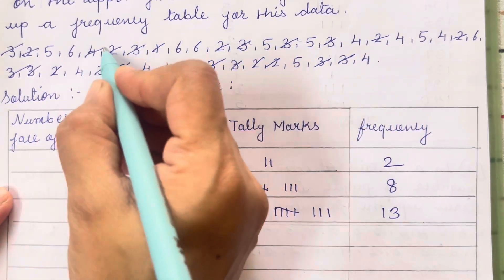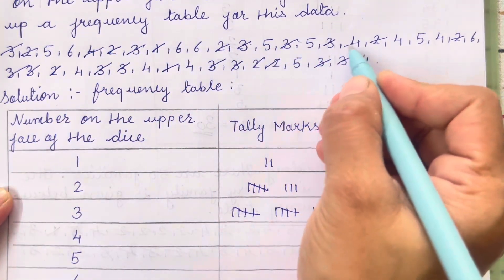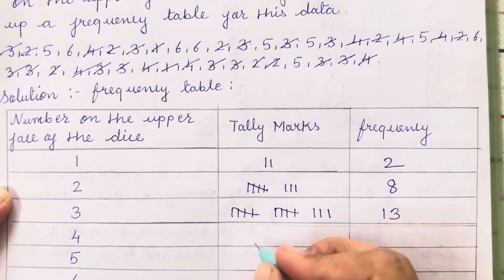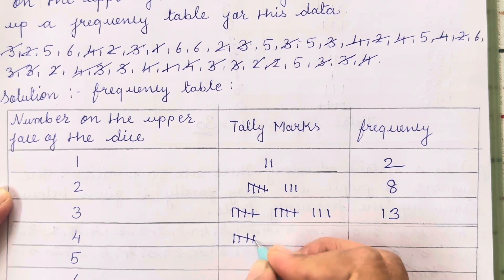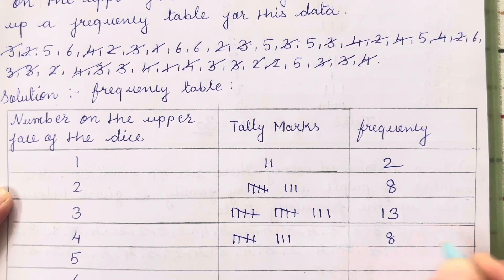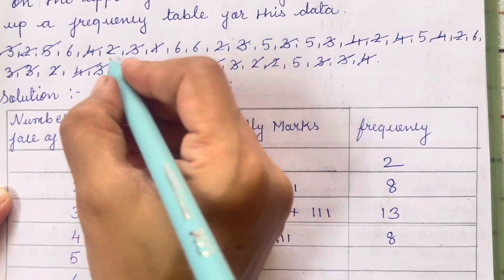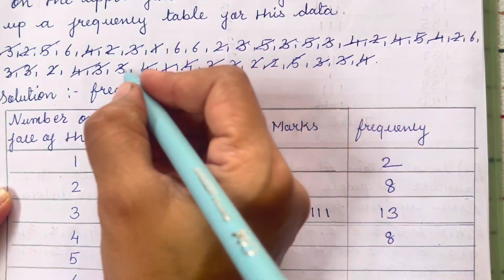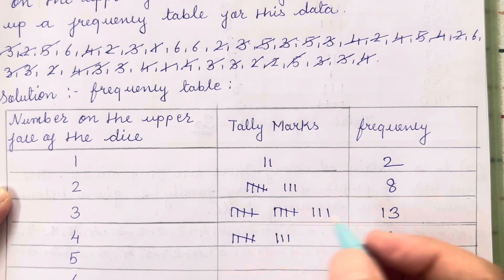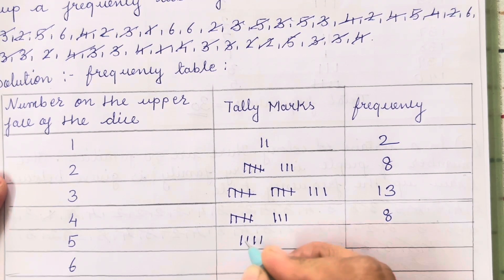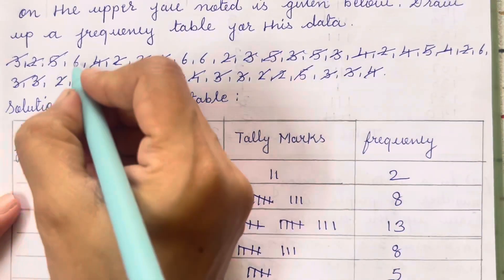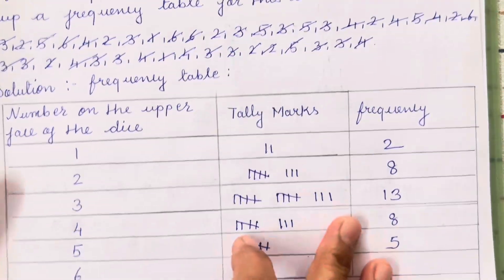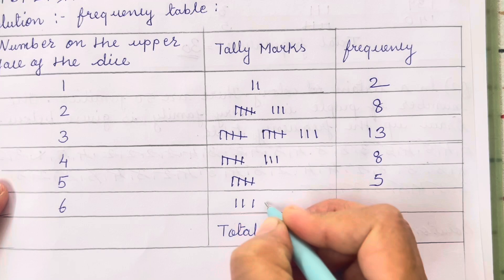How many 4s are there? Counting: 1, 2, 3, 4, 5, 6, 7, 8 — frequency is 8. Then how many 5s? Counting: 1, 2, 3, 4, 5 — frequency is 5. Then for 6: counting gives 1, 2, 3, 4 — frequency is 4.